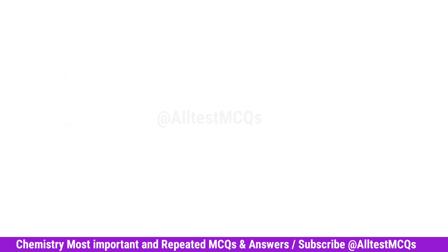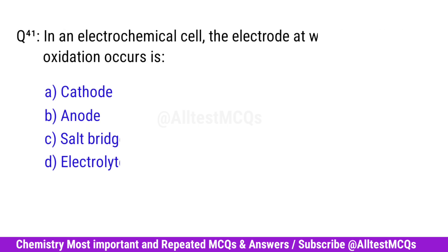Question No. 41. In an electrochemical cell, the electrode at which oxidation occurs is? Correct option is B. Anode.